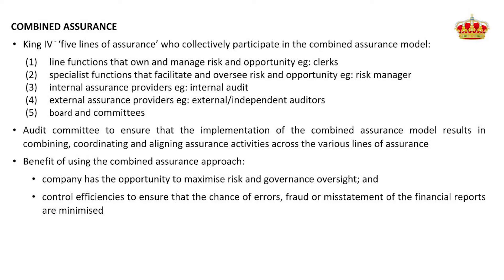It is the audit committee's responsibility to ensure that this combined assurance model is implemented and effectively results in the combining and aligning of assurance activities. There are many benefits to this combined approach. The company has the opportunity to maximise its risk and governance oversight — risks around internal errors and frauds are reduced. Risk oversight opportunity is maximised, and control inefficiencies, errors, frauds and misstatements are all minimised.